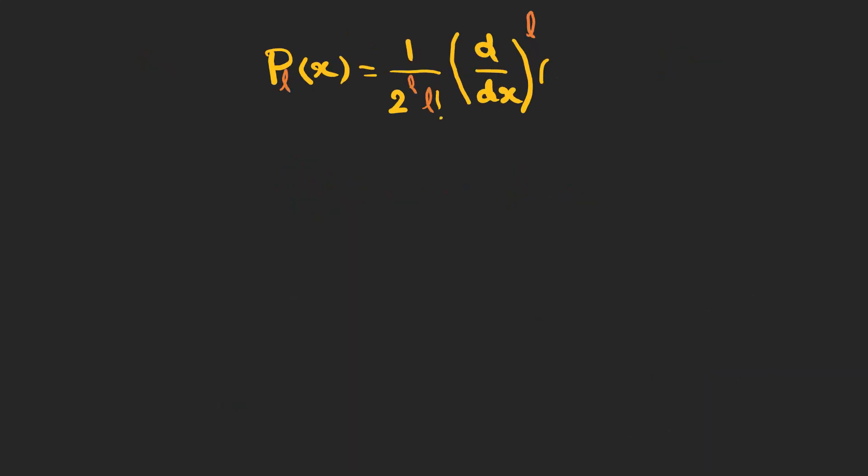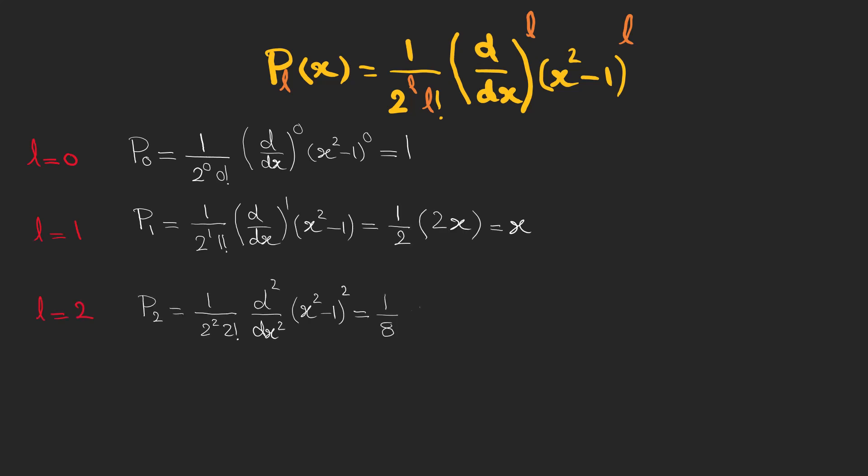Let's first find some of these polynomials for different Ls. This is a case for L=0. For L=1, we have the answer to be x. And for L=2, the answer is a second order polynomial.